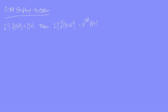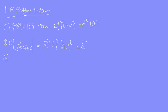We will consider Problem 1: find the Laplace inverse of 1 by (s+2)² plus 16. In this problem, in place of s we have s+2, so we use the First Shifting Theorem. This gives e^(-2t) times L inverse of 1 by s² + 4², which equals e^(-2t) times (1/4) sin 4t. That is the answer.